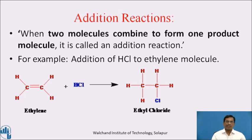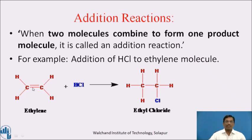First, addition reaction. When two molecules combine to form one product molecule, it is called an addition reaction. For example, addition of hydrochloric acid to ethylene gives ethyl chloride. In ethylene, a carbon-carbon double bond is present — that is the unsaturation point. This bond breaks open and hydrochloric acid gets added across the double bond to each carbon. The pi bond opening gives a site for addition of hydrogen and chlorine from hydrochloric acid, ending with the formation of ethyl chloride containing only a single bond.